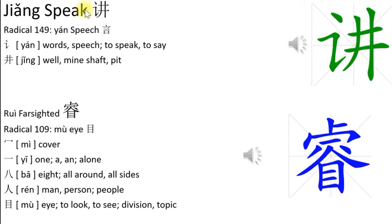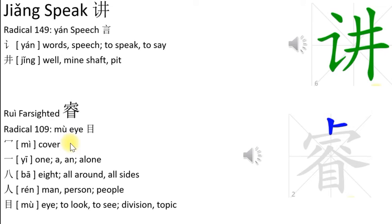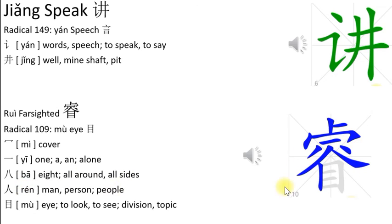The character 语 involves radical 109 and a combination of components. That's it for today — see you next time, bye for now.